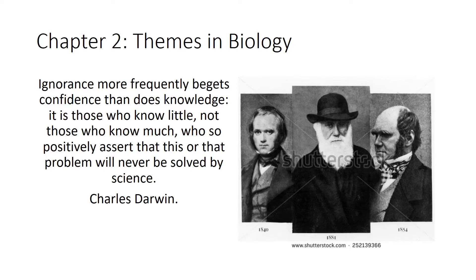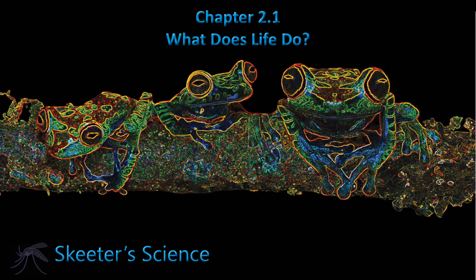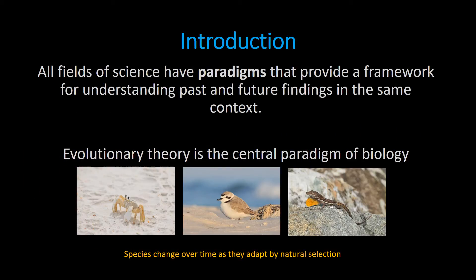Science works. Chapter 2, Section 1 — this is about what does life do? In this section, what we're going to do is figure out what is the process of life. How can we recognize life if we were to find it elsewhere? All fields of science have paradigms that provide a framework for understanding past and future findings and put them all in the same context.